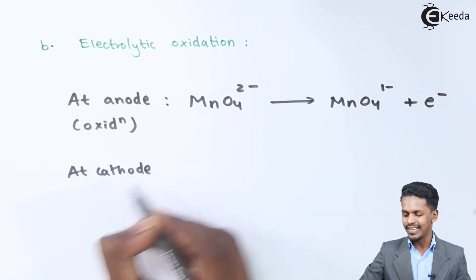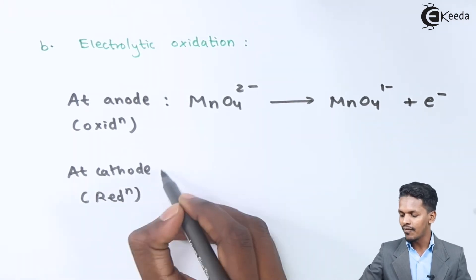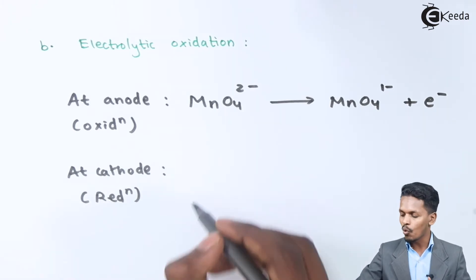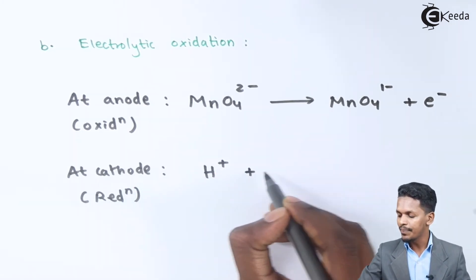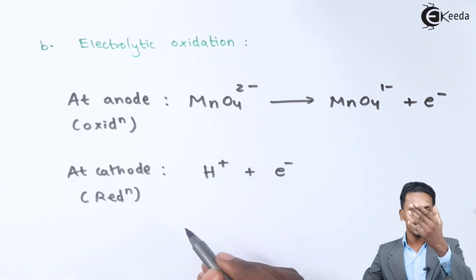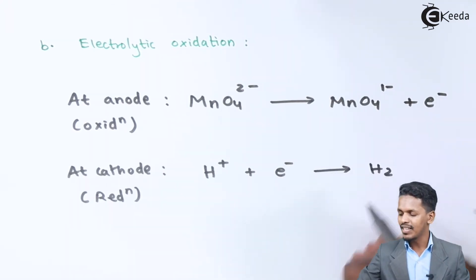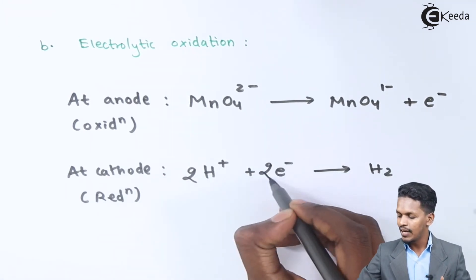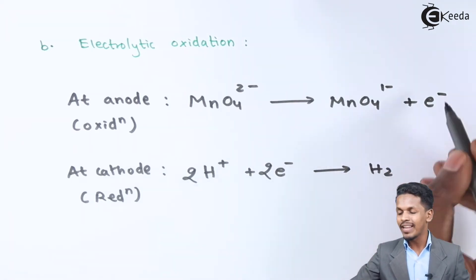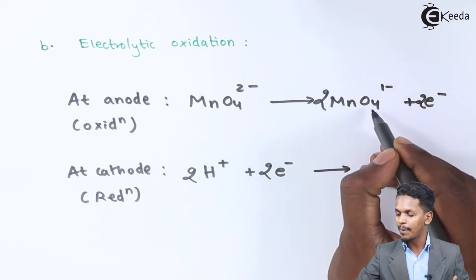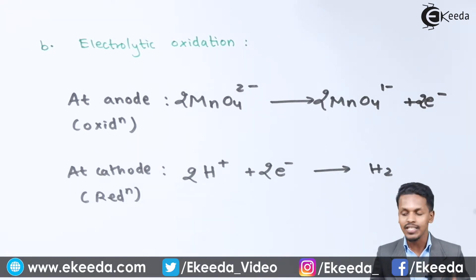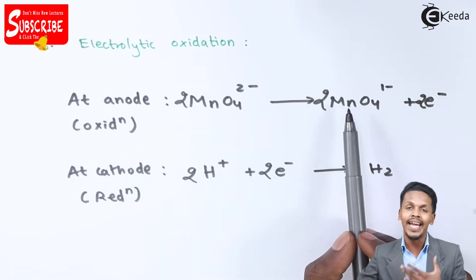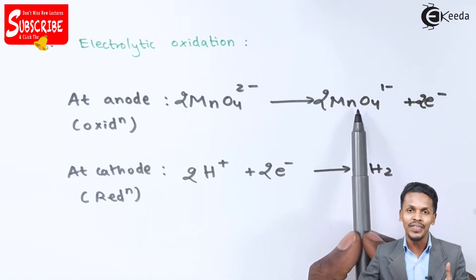At the cathode, the H⁺ ion takes away electrons to obtain H2 gas. Balancing the reaction: two moles of H⁺ take two moles of electrons to obtain H2. This also gives us two moles of MnO4⁻ from two moles of MnO4²⁻. Overall, hydrogen gas is liberated at the cathode, and KMnO4 is obtained in pure crystalline form with higher efficiency compared to chemical oxidation.